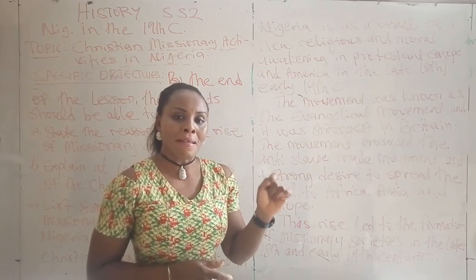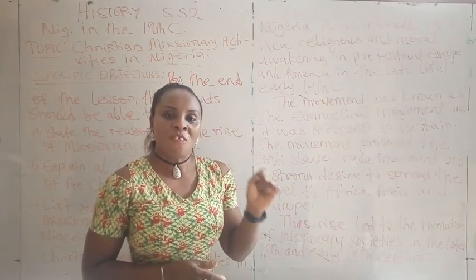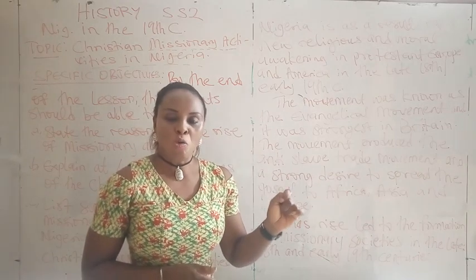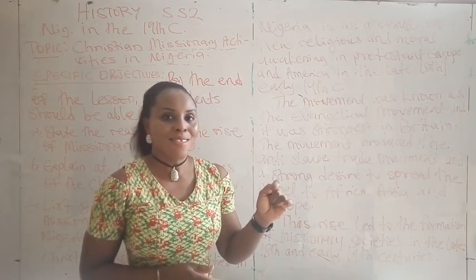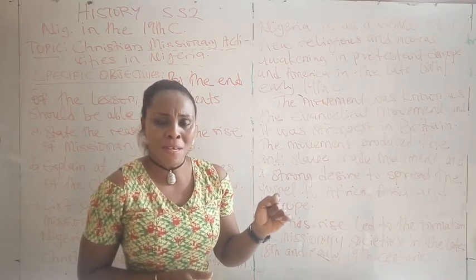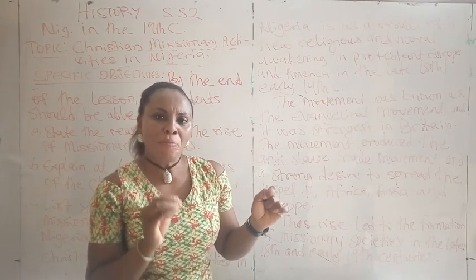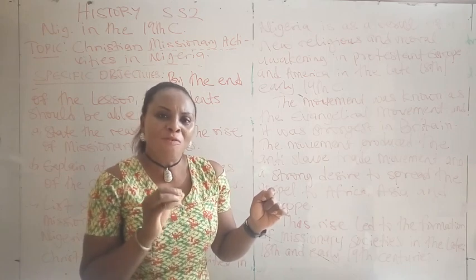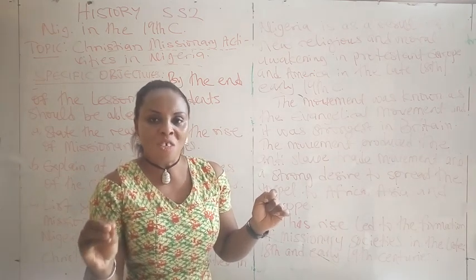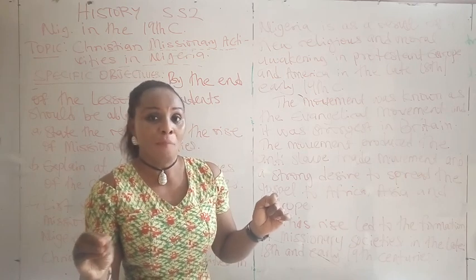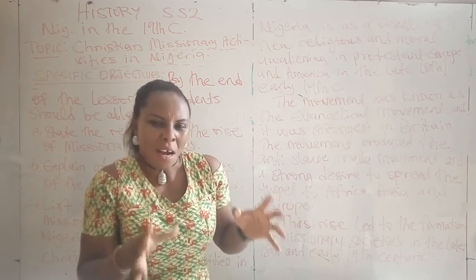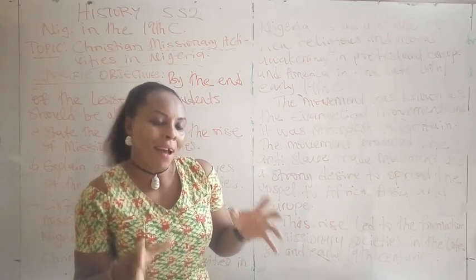Britain was the first country to abolish the slave trade. They got to a point where they felt that slaves were no longer needed, and as a result they needed a replacement. But something was wrong — they needed a force to appease these slaves, especially those in Africa, before anything else could be done. So there was that need to carry out Christian missionary activities.